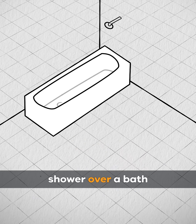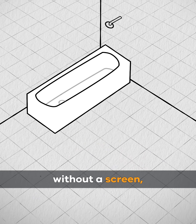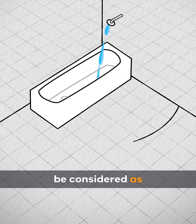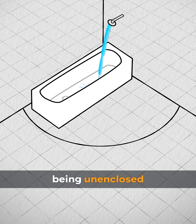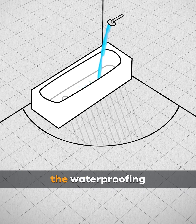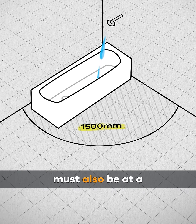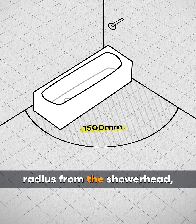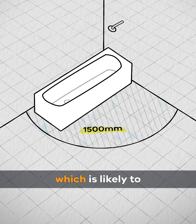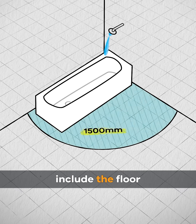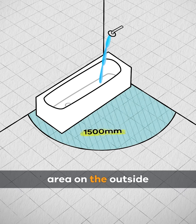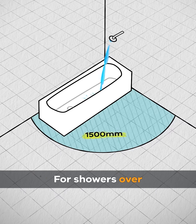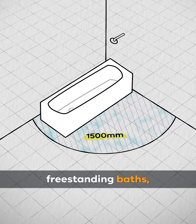Where there is a shower over a bath without a screen, the shower area must be considered as being unenclosed and the extent of the waterproofing must also be at a 1500mm horizontal radius from the shower head, which is likely to include the floor area on the outside of the bath, such as where the shower is over freestanding baths.